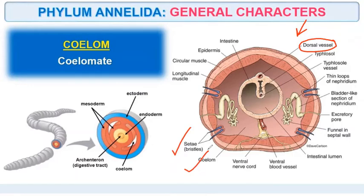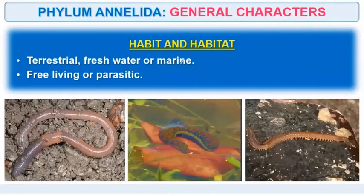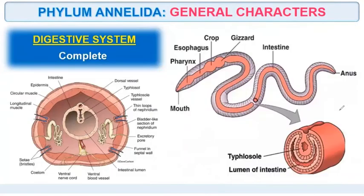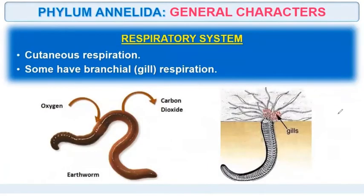They also have circular and longitudinal muscles. Regarding habit and habitat, they are terrestrial, freshwater, or marine. Organisms are free living as well as parasitic. Digestive system is complete with mouth and anus. Respiratory system — they show cutaneous respiration, meaning through their skin. Some have branchial gills that help them in respiration.